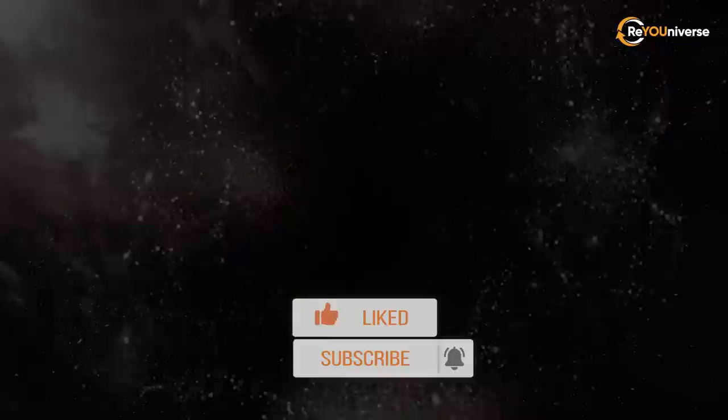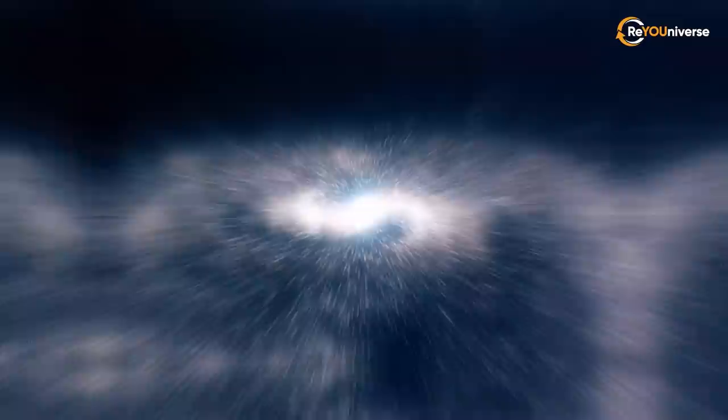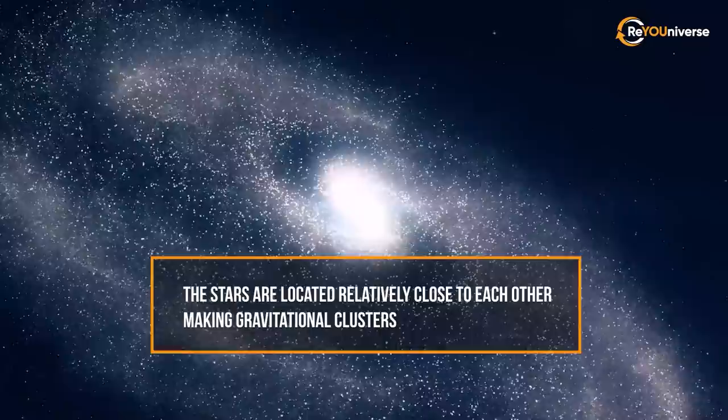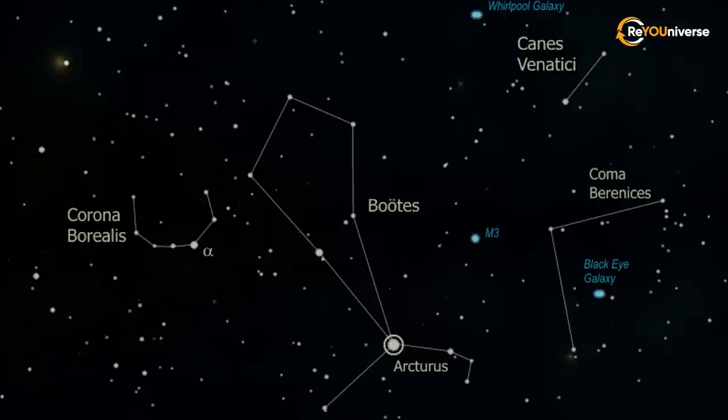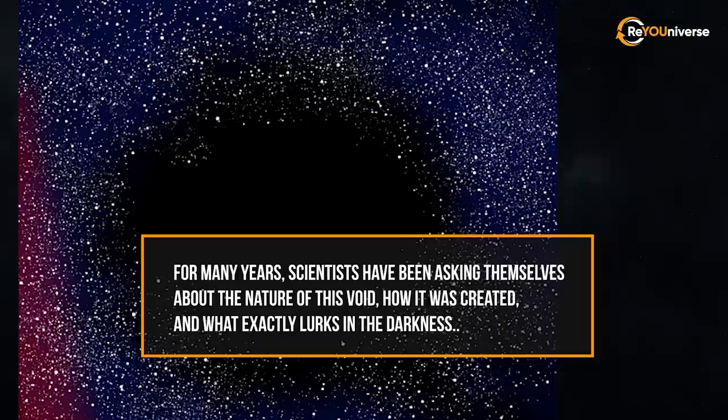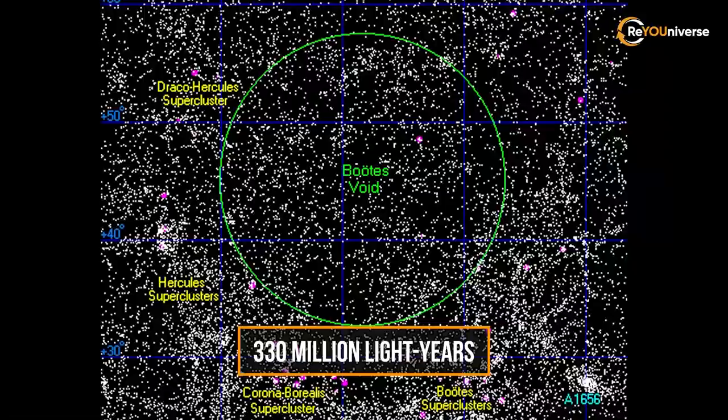When we gaze at the stars, it seems that they are dispersed evenly throughout the sky. But this is an illusion, as all stars are in galaxies. They are located relatively close to each other, making gravitational clusters. But the emptiness created between them is nothing compared to the scale of the void. The Boötes Void is one of the biggest voids in the whole universe. It is located 700 million light-years away from our planet. The Great Void was discovered in 1981 by Robert Kirshner and his team.